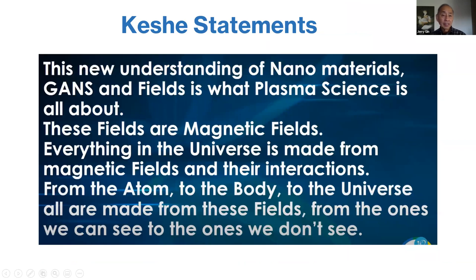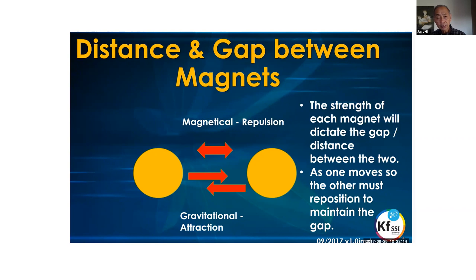Keshe's statement is that this new understanding of nano materials, GANs, and fields is what plasma science is all about. These fields are magnetic fields. Everything in the universe is made from magnetic fields and their interactions — from the atom to the body to the universe — all are made from these fields, from the ones we can see to the ones we don't see. GANs basically has a magnetic and a gravitational aspect to it. Magnets, you think of them as north and south, but north and south are nothing more than magnetic and gravitational. It has attraction — gravitational — and magnetic repulsion.